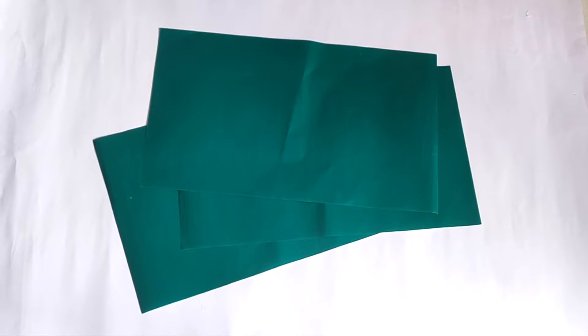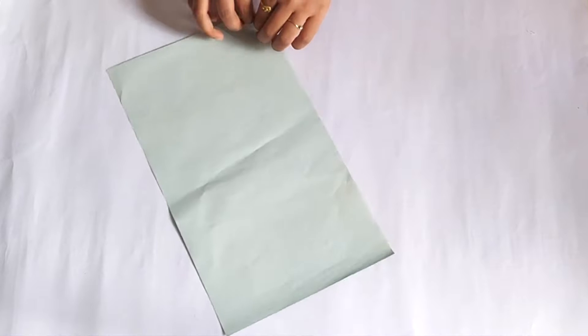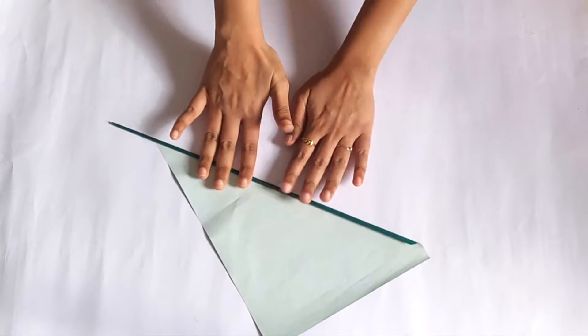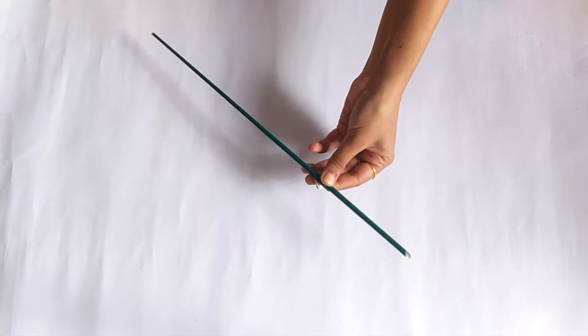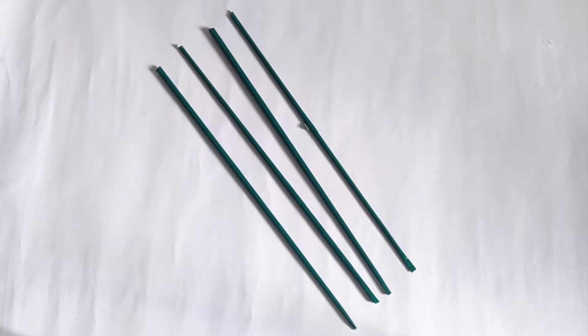For making Christmas tree, I took this green craft paper which reminded me of my school time. I used to use this a lot during Arts and Crafts lecture. I simply rolled it like this to make a thin pipe, secured it with Fevicol and I made four such pipes.